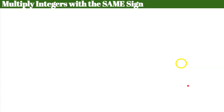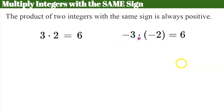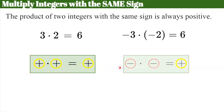Now we're going to learn our first rule: multiplying integers that have the same sign. The rule states that the product of two integers with the same sign is always positive. For example, 3 × 2 = positive 6, and -3 × -2 = positive 6. A positive times a positive equals a positive, and a negative times a negative also equals a positive. When both integers have the same sign, you know your product will be positive.